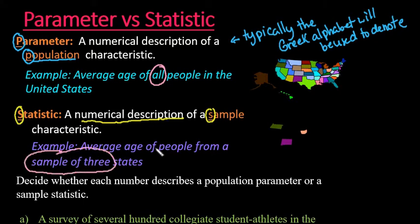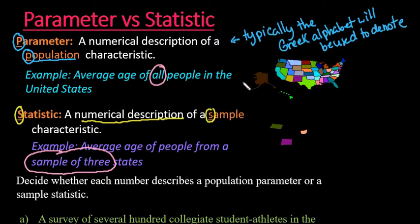A lot of times we deal with samples in statistics instead of the entire population, because a lot of times it's hard to study the entire population but it's a lot easier to select a subset of people. For example, it would be really difficult to go through and find every single person that lives in the United States. We do perform censuses every 10 years where we try to figure out who lives there and their age, but a lot of times people still get missed no matter how much they try to be accurate.